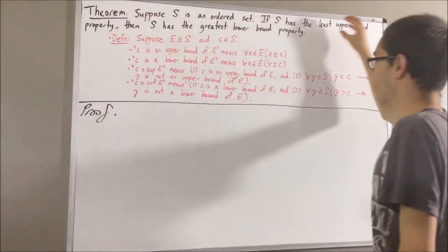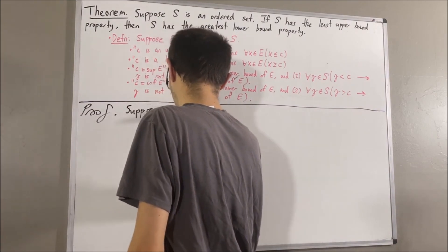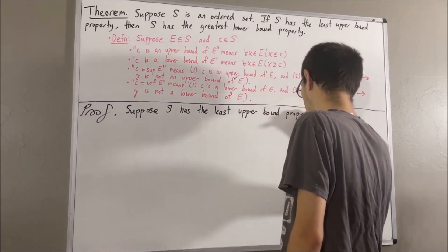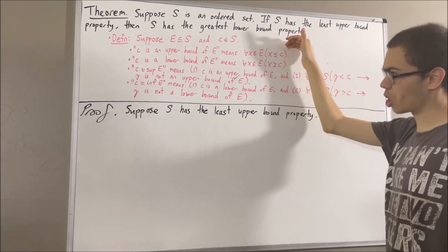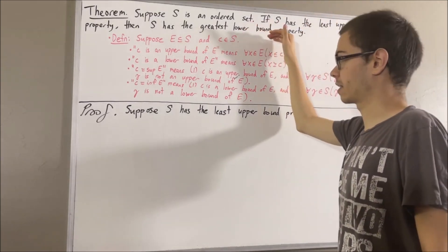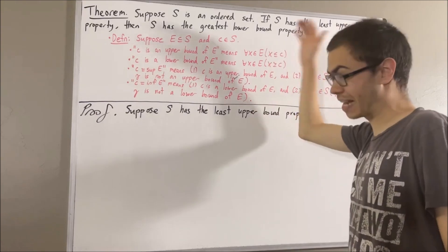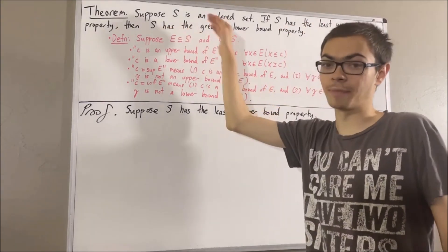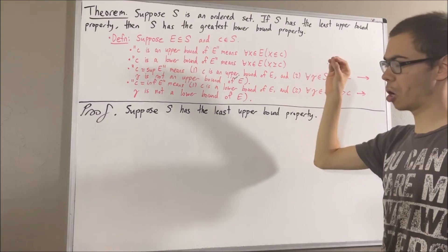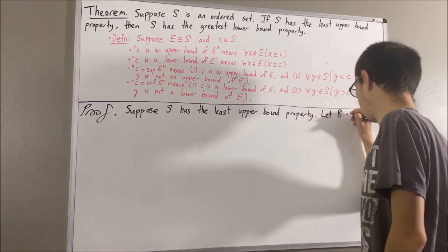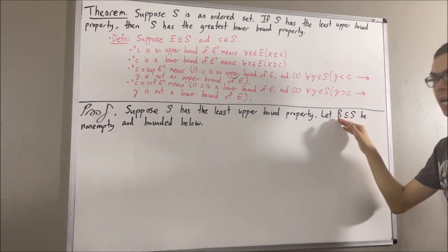So now let's get into proving this theorem. To start out the proof, we're going to suppose that S has the least upper bound property. And from here, our goal is to show that S has the greatest lower bound property, which means we want to show that every subset of S which is non-empty and bounded below has an infimum. So let's give ourselves an arbitrary subset of S which is non-empty and bounded below. I'll call that subset B. The whole goal from here is to show that B has an infimum.